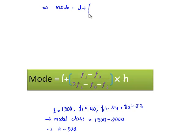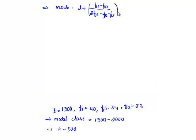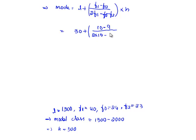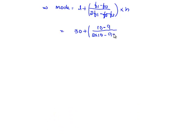Substituting all these values in the formula: Mode = L + [(F1 − F0) / (2F1 − F0 − F2)] × H. Writing the values: 30 + [(10 − 9) / (2×10 − 9 − 3)] × 5.